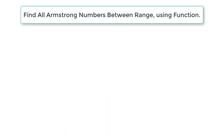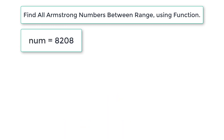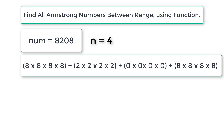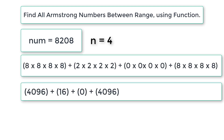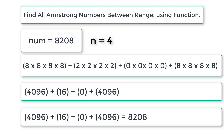So 370 is an Armstrong number. If the user enters 8208, which has 4 digits — 8, 2, 0, and 8 — each individual digit is raised to the power of 4 and added. The result is 8208, which equals the user-entered number, so 8208 is an Armstrong number as well.